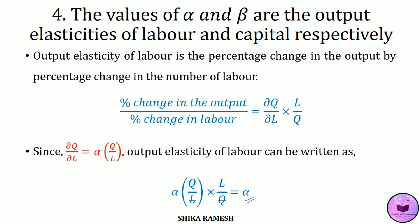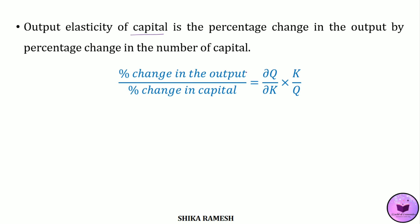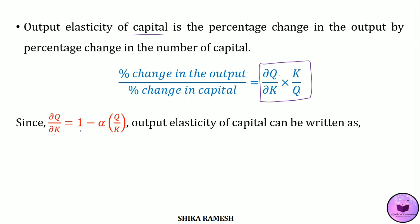Similarly, the output elasticity of capital is the percentage change in output by percentage change in capital, represented as (∂Q/∂K)·(K/Q). We derived MPK = (1−α)·(Q/K). Substituting gives (1−α)·(Q/K)·(K/Q), and Q and K cancel out, giving 1−α, which equals beta — the output elasticity of capital.